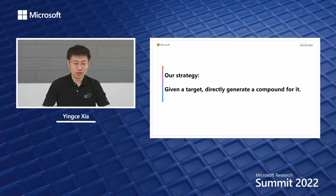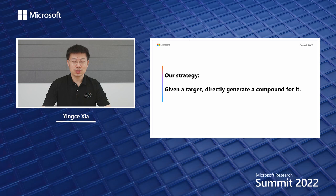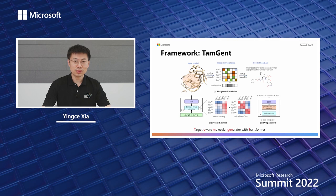So what can we do? Our strategy is that given the target, we want to use a model to directly generate a compound for the given target, so that we can improve efficiency and we can get novel drugs. Let us see our method. This is our framework called TAMGENT, which is short for Target-Aware Molecule Generation with Transformer, because the framework is built upon transformer.